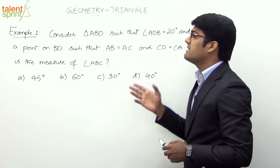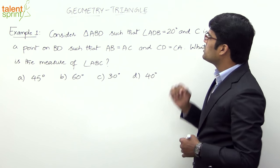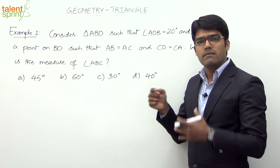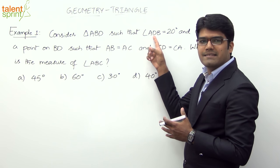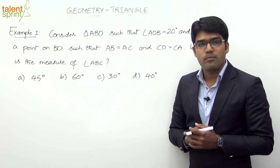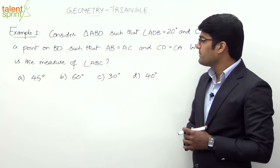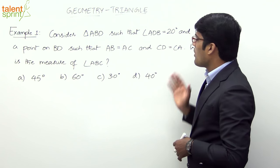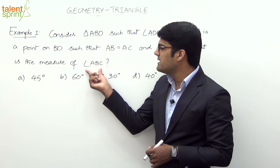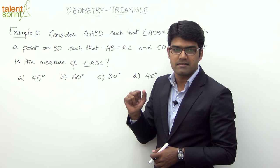It says: consider a triangle ABD such that angle ADB is equal to 20 degrees, which means angle D. Whenever we say angle ADB, we look at the vertex which is at the center — that is D. So angle D is 20 degrees. C is a point on BD such that AB equals AC and CD equals CA. What is the measure of angle ABC? Angle ABC implies angle B — we always consider the vertex at the center of the three vertices.